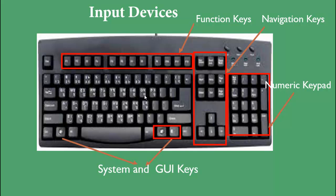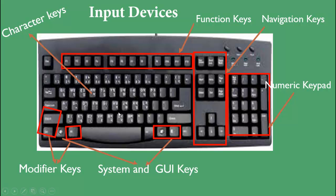Next are system and GUI keys — the Windows key and the right and left mouse button keys. Modifier keys include Shift, Control, and Alt. Character keys cover individual characters, numbers, and special characters such as the hash and dollar symbols.